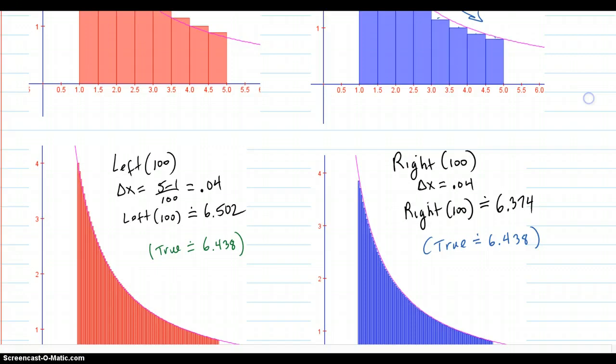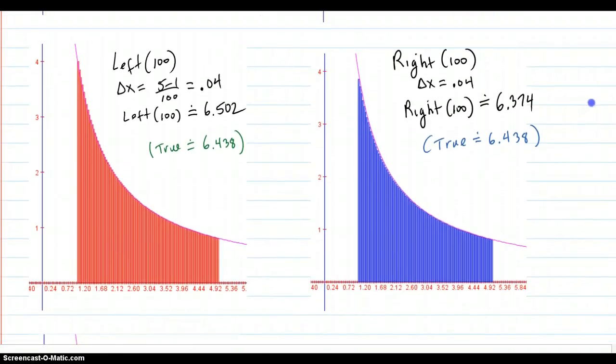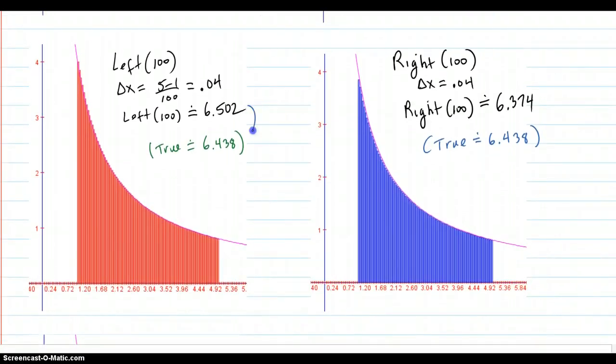And then we jump up to 100 subintervals. And you can see that the left is closing and still over. You can see right here, when you zoom in on that, that your rectangle still is over. So your left sum is higher than your true.